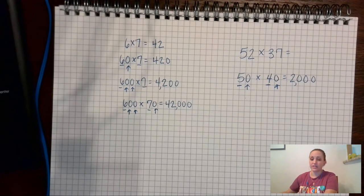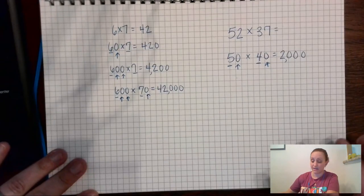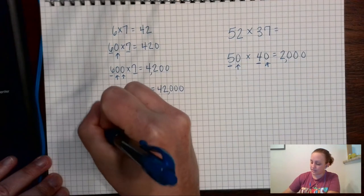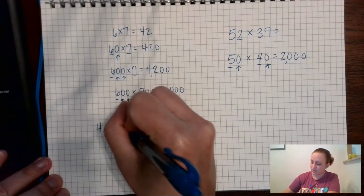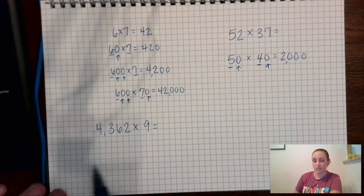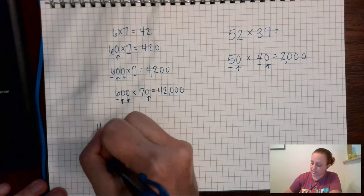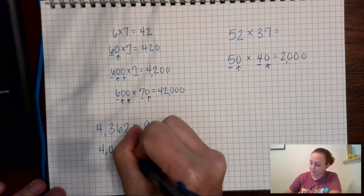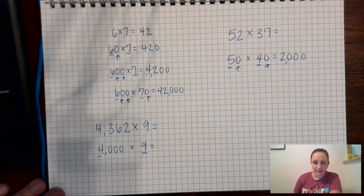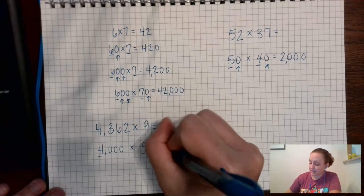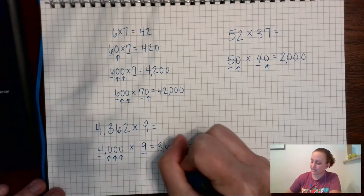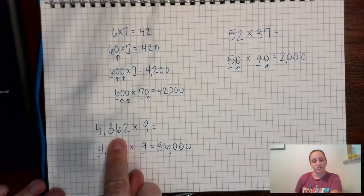Okay so let's look at another example of using estimation. I'm going to do it down here so we have space. Okay let's say I have 4362 times 9. 4362 times 9. Well 4362 is pretty close to 4000 and then I'm not going to round my 9, I just keep 9, 9. Okay, 4 times 9 is 36 and then I have one, two, three zeros.